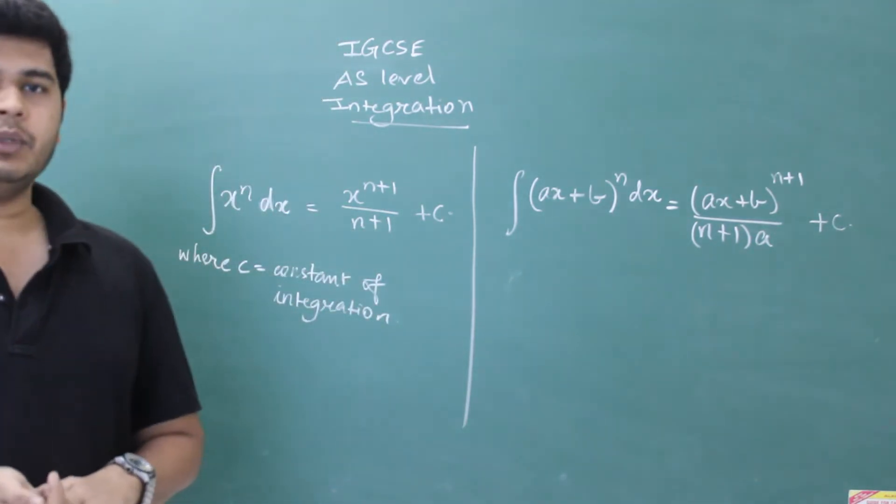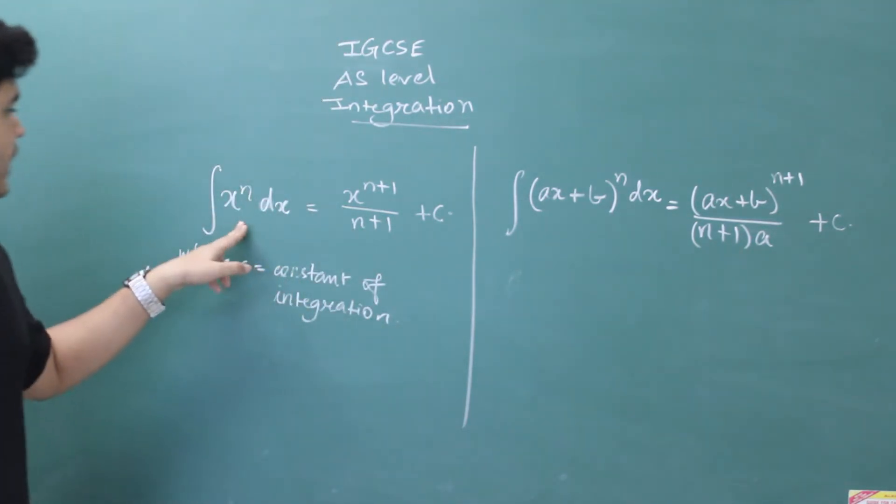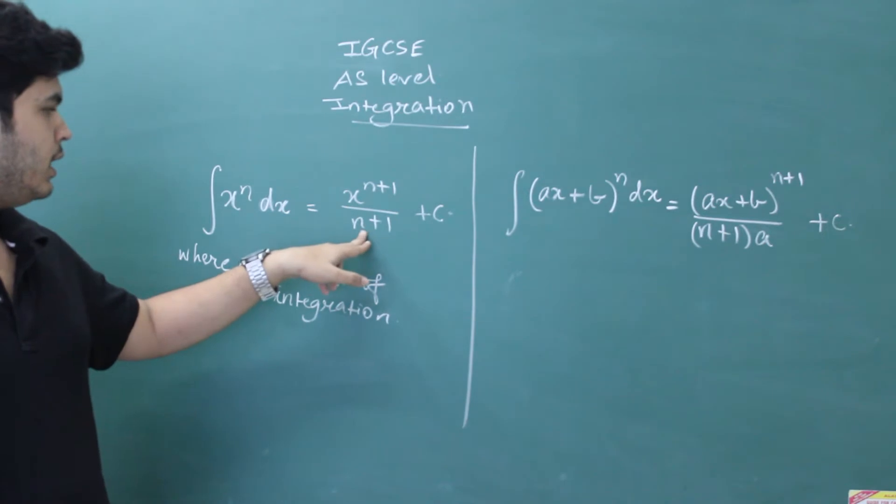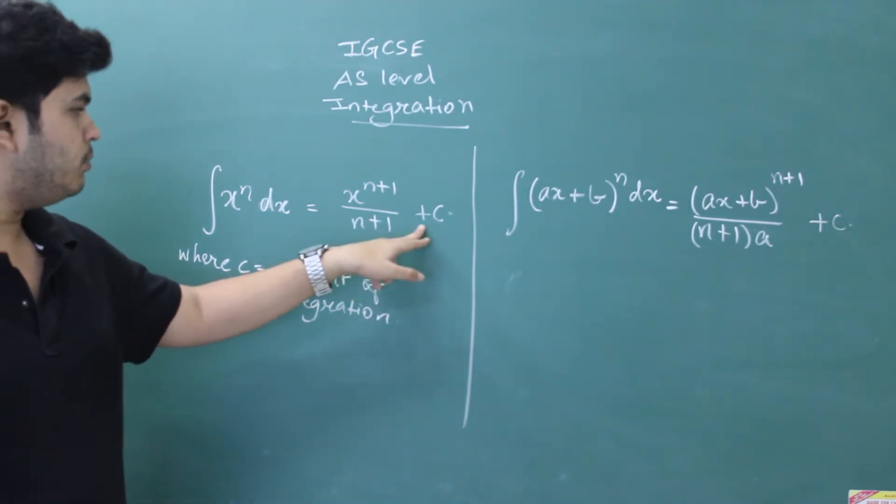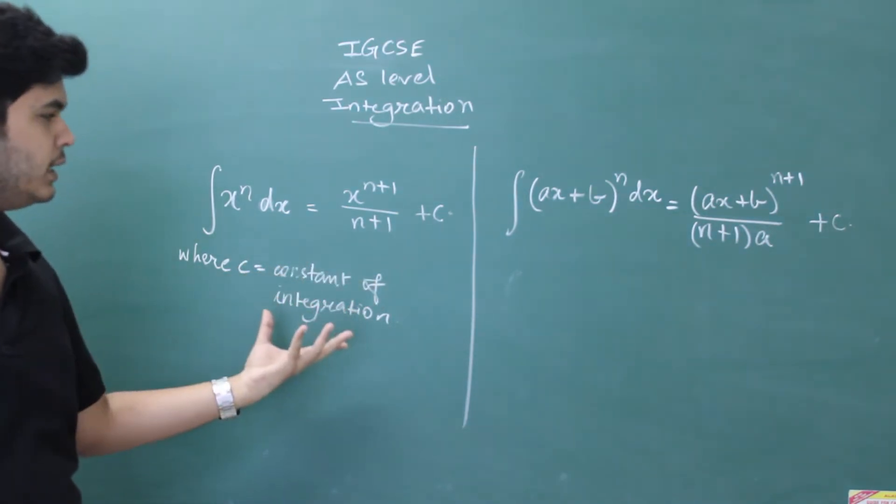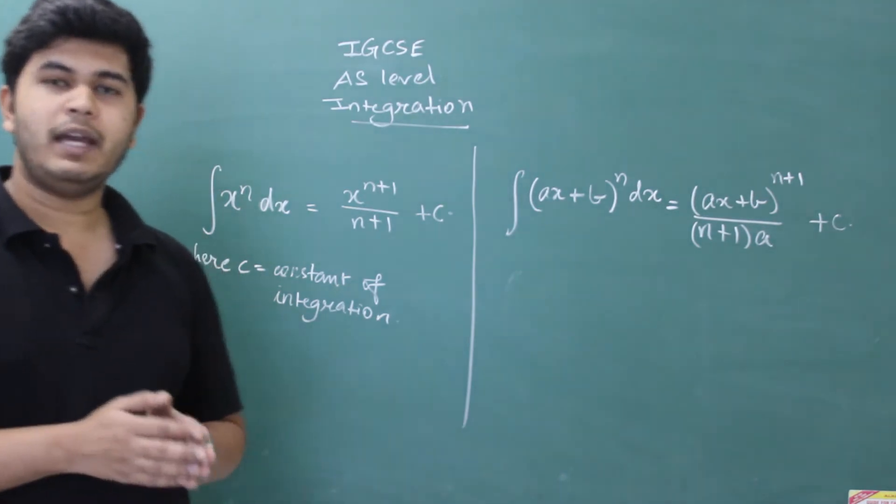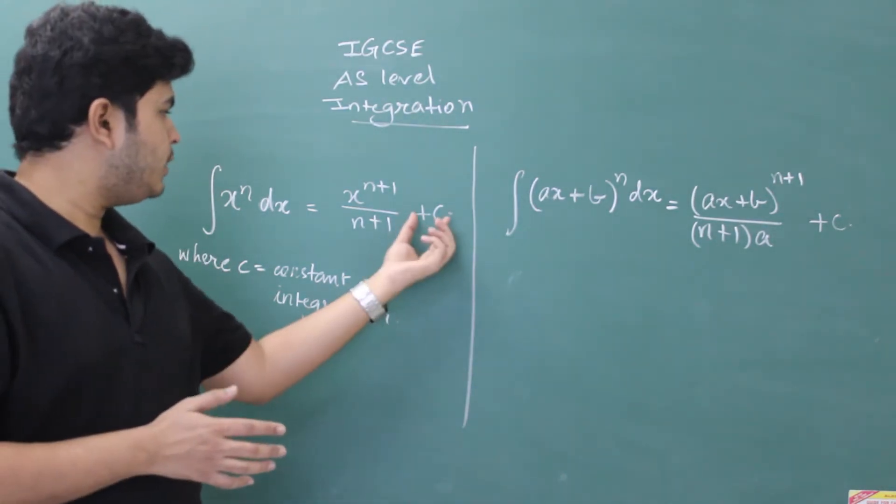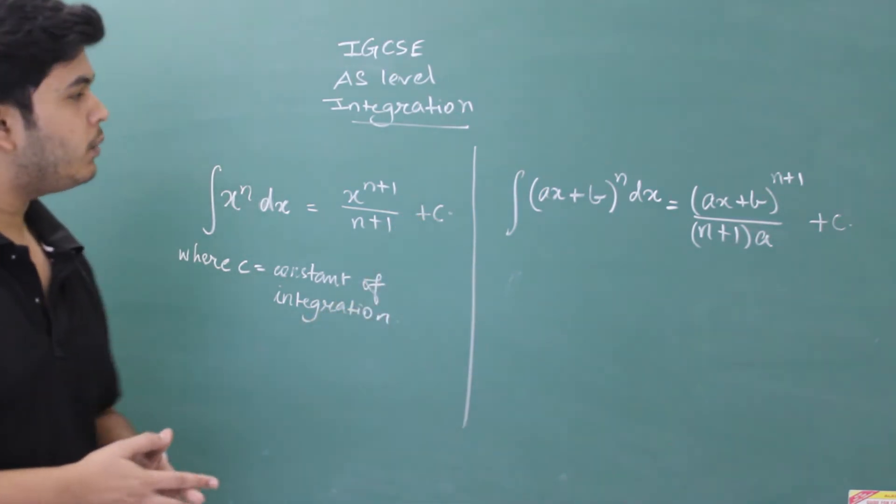There are two formulas to start with. First one: integral x to the power n with respect to dx will give you x to the power n plus 1 divided by n plus 1 plus c. C is constant of integration and whenever you solve any indefinite integral, it's compulsory that you have to put plus c sign at the end.